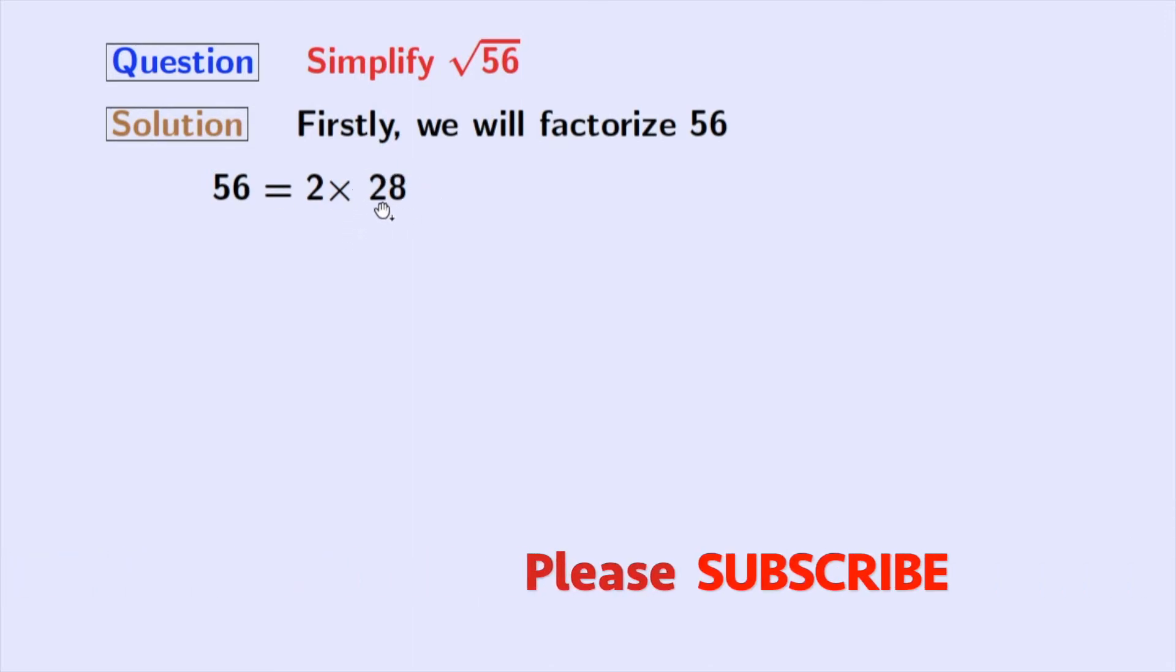Now, we have to factorize 28 and this is also an even number. So, it will be divisible by 2 and we get 28 equal to 2 times 14. Now, we will factorize 14 and we all know that 14 equal to 2 times 7.